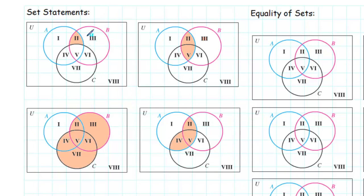Consider this first Venn diagram, where we're going to let A represent the set of actresses, B the set of ballerinas, and C the set of comedians, where the universal set U is the set of all women. What would this shaded region represent?